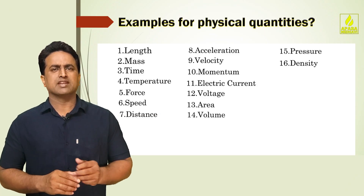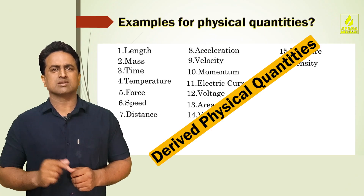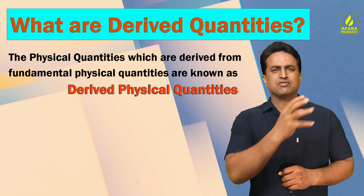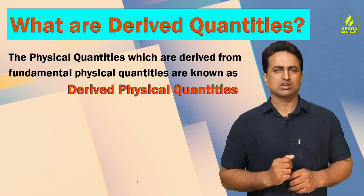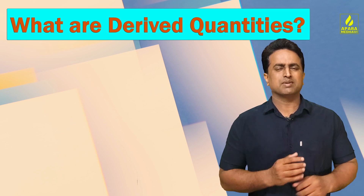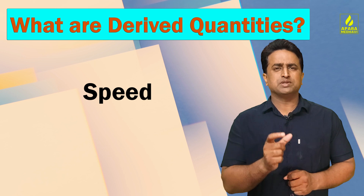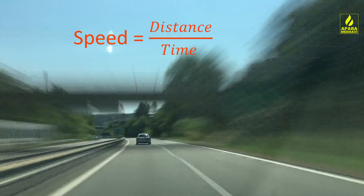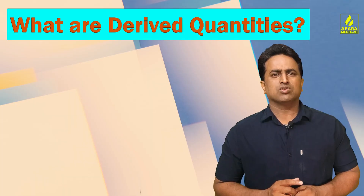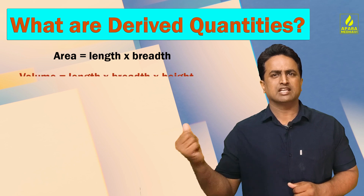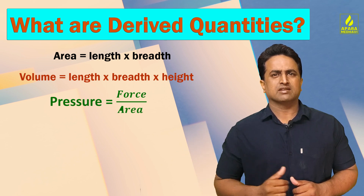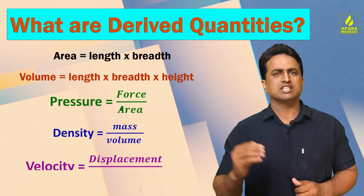Fundamental quantities give rise to derived quantities. What are derived quantities? The physical quantities which are derived from fundamental quantities are known as derived quantities. Derived quantities are formed by multiplying or dividing 2 or 3 fundamental quantities. For example, speed is a derived quantity — speed is distance divided by time.